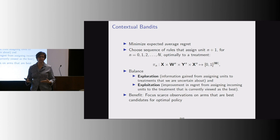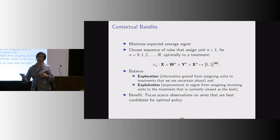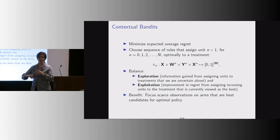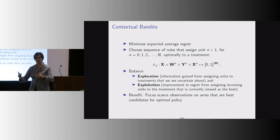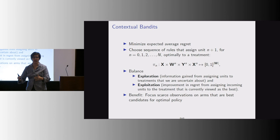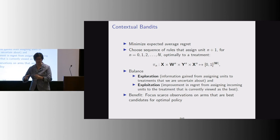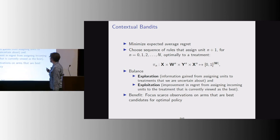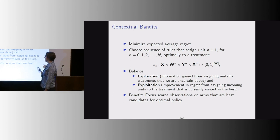The theorems are a little unsatisfying, partly because the complexity is so hard. They all say that if you run this long enough, the regret goes down or can be bounded, but they don't actually tell you exactly what to do. The big benefit of these methods is they focus scarce observations on arms that are best candidates for an optimal policy.